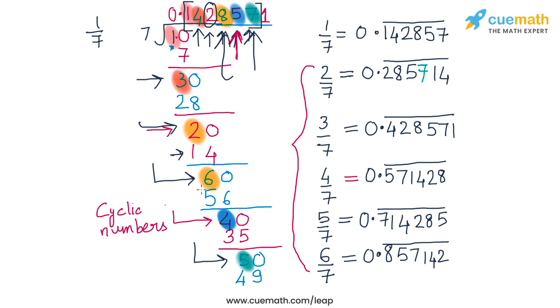The number 142857 — this block of 6 digits, which is the repeating part of 1 by 7 — is actually one of the most well-known cyclic numbers.